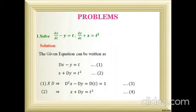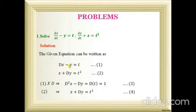To proceed as a higher order linear differential equation, I need to reduce this to a single equation by cancelling out one of the dependent variables. Either x or y must be eliminated. Here y has opposite signs — minus in the first equation and plus in the second — so I will eliminate y first. The y coefficient in equation 1 is 1 and in equation 2 is D, so I multiply equation 1 by D to get D²x minus Dy equals D(t), where d/dt of t equals 1.